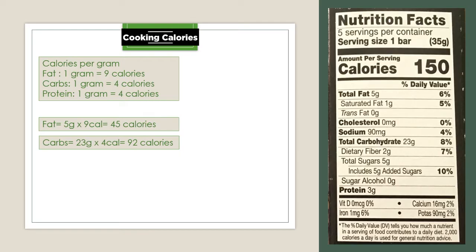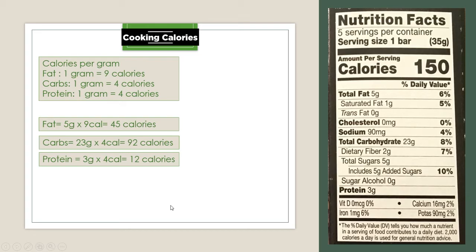And then lastly is the total protein, which is 3 grams. 3 times 4 equals 12 calories.